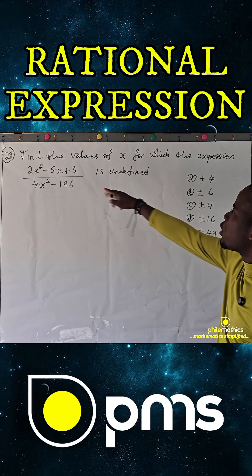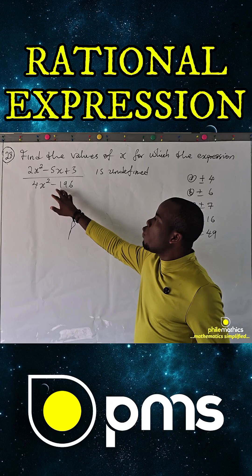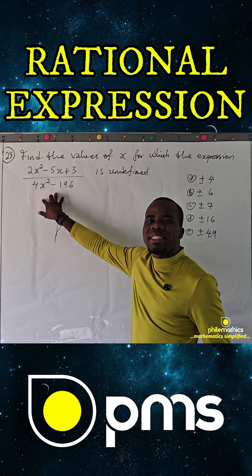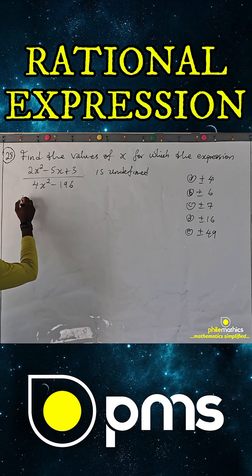Find the values of x for which the expression is undefined. It's simply to find where the denominator is 0. Because we know that numbers like 4 over 0, minus 5 over 0, they are all undefined.